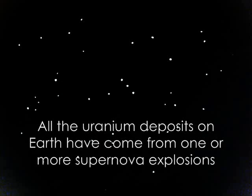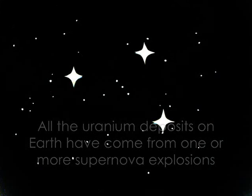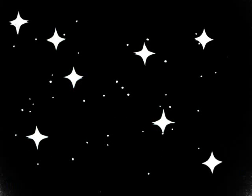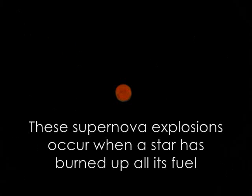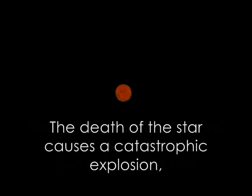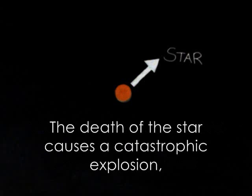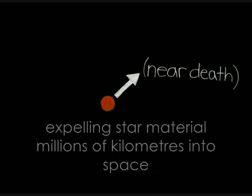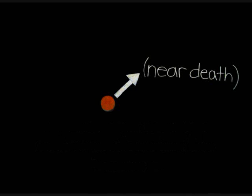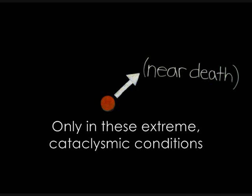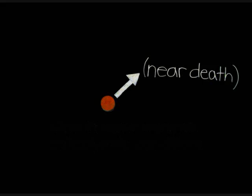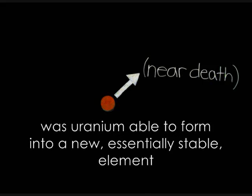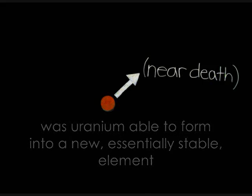All the uranium deposits on Earth have come from one or more supernova explosions. These supernova explosions occur when a star has burned up all its fuel. The death of the star causes a catastrophic explosion, expelling star material millions of kilometers into space. Only in these extreme cataclysmic conditions was uranium able to form into a new, essentially stable element.